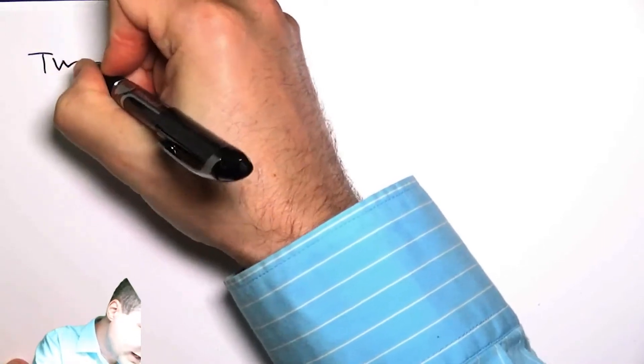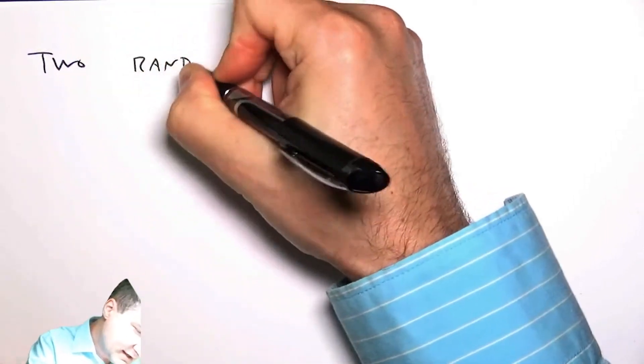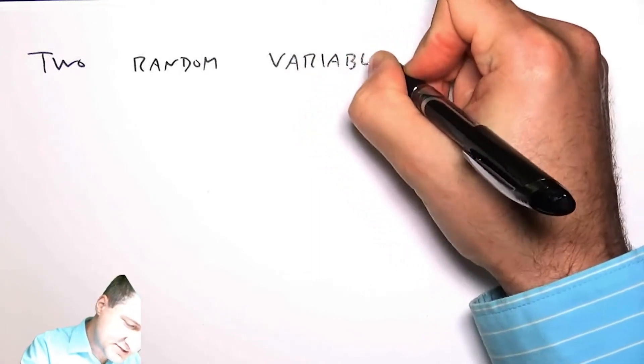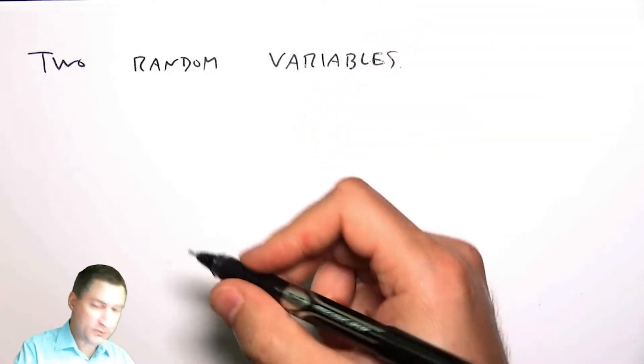Now we've talked about random variables pretty exhaustively, and the next step is to talk about more than one random variable at a time. I'm going to start with two random variables, and we can generalize the idea to really any number of random variables.